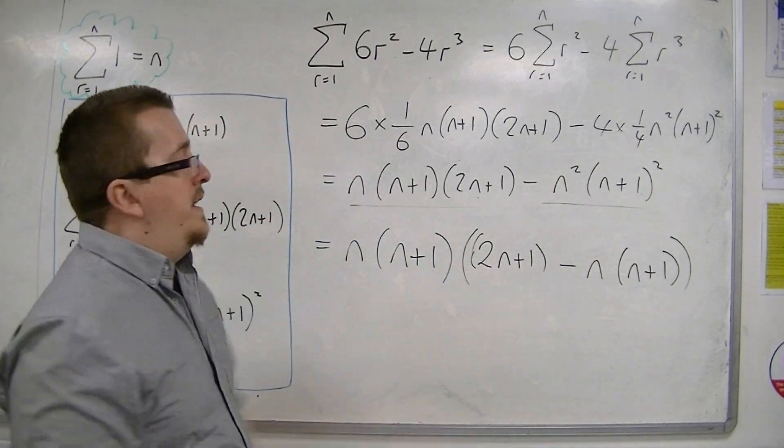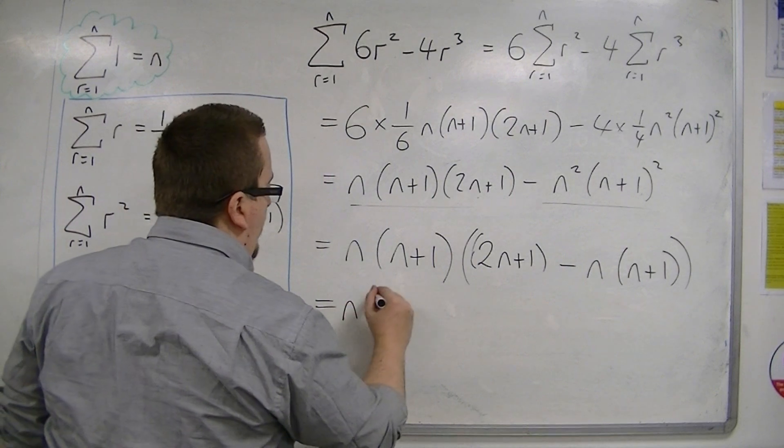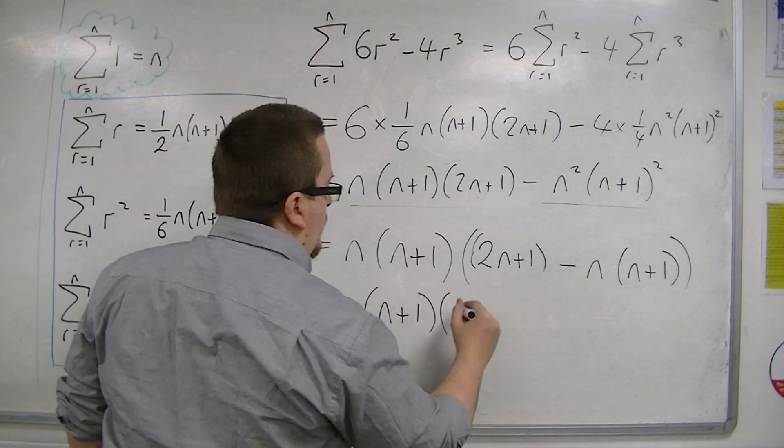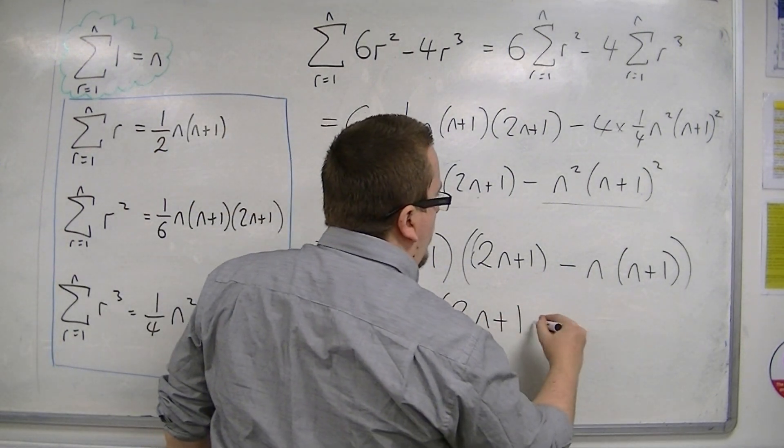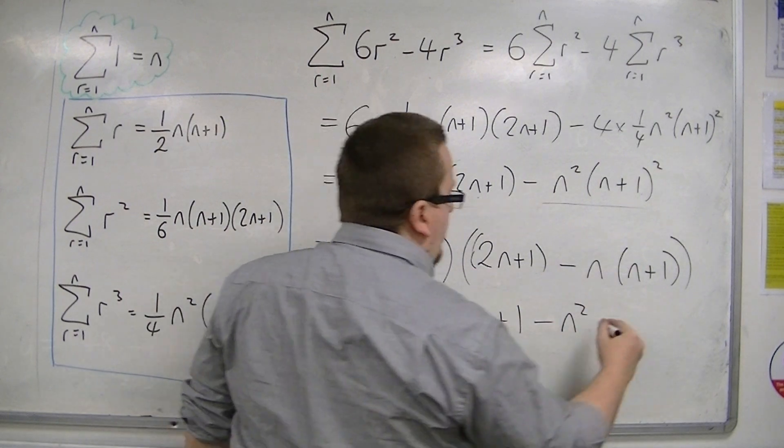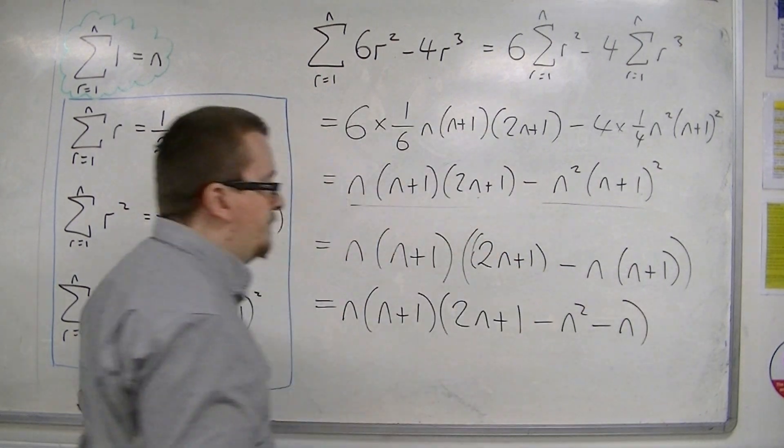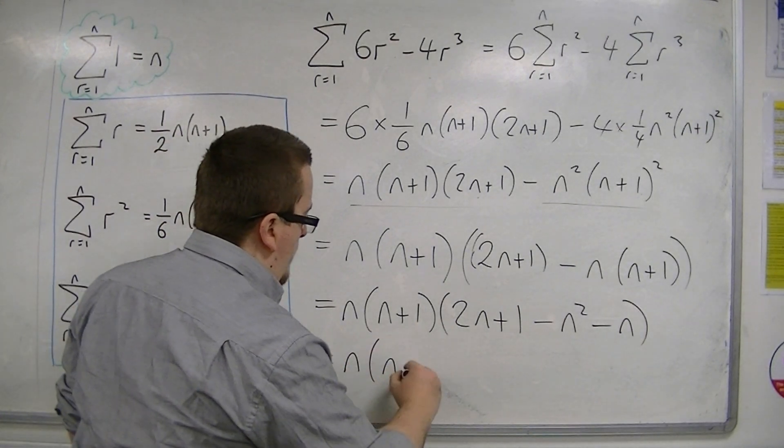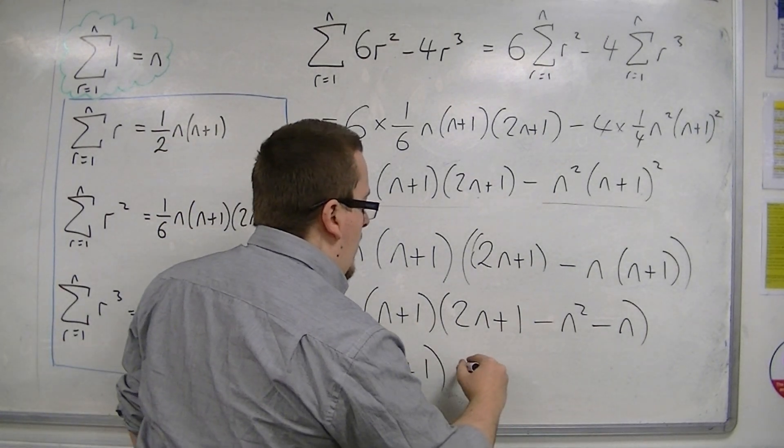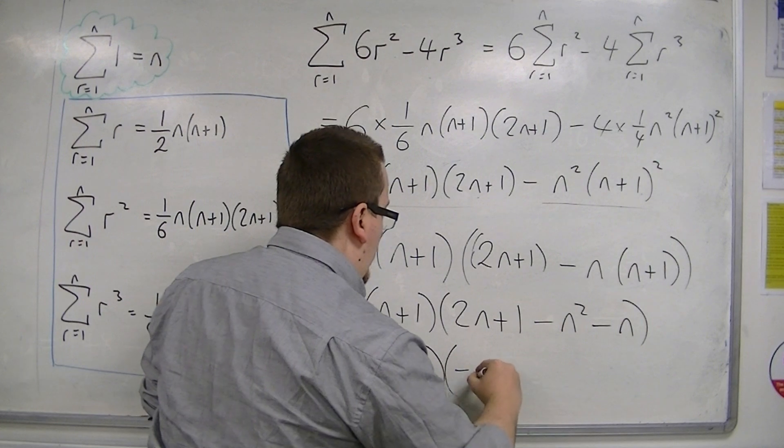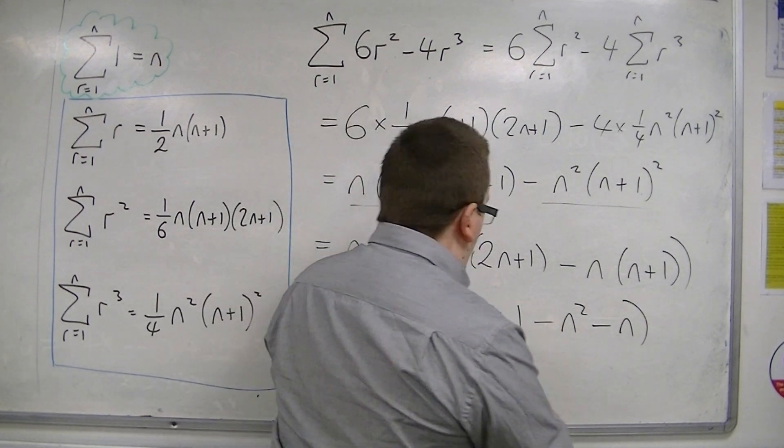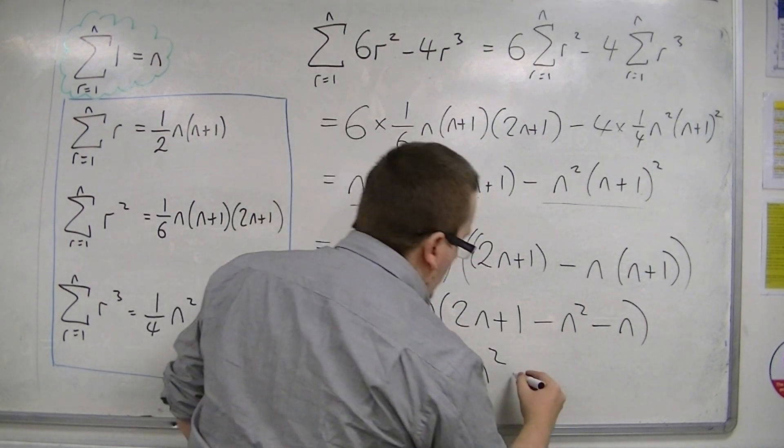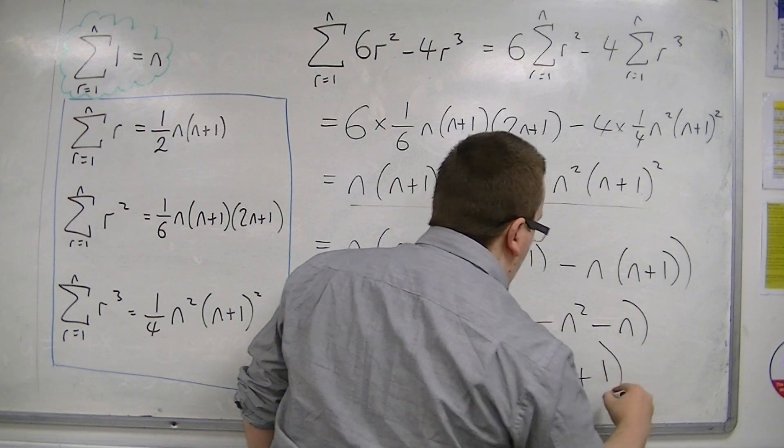Now, here, I'm going to have to expand those brackets. There's nothing I can factor out there. So, I've got 2n plus 1, take away n squared, take away n. So, we've got n, n plus 1, minus n squared, 2n, take away n, is just n, and I've got a plus 1 now.